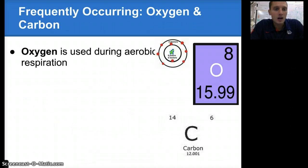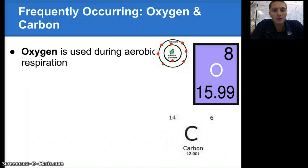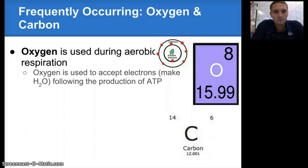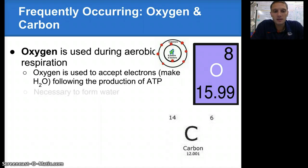Another element we're going to take a look at is oxygen. Oxygen is used during aerobic respiration — so during cellular respiration, when mitochondria are taking sugar or glucose and changing that into ATP, oxygen is used in that process. Eukaryotic cells — plants and animals — use oxygen for this process to occur. Oxygen is specifically used to accept electrons, making H2O water following the production of ATP. It's necessary to form water and is one of the primary elements in water.